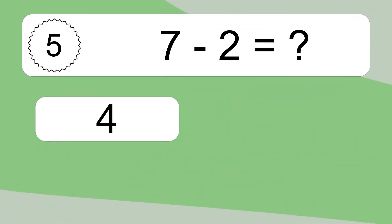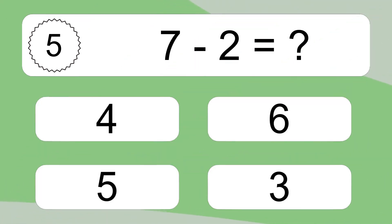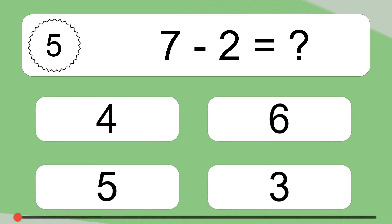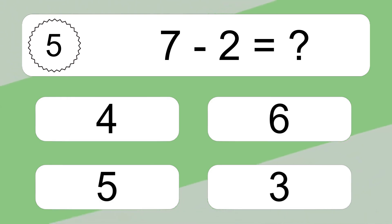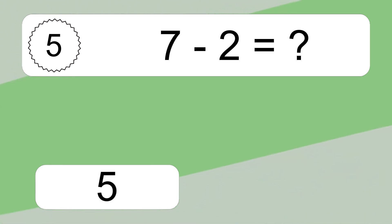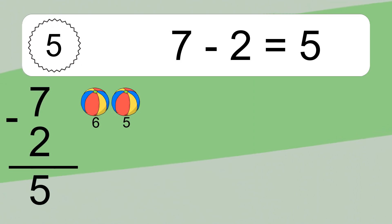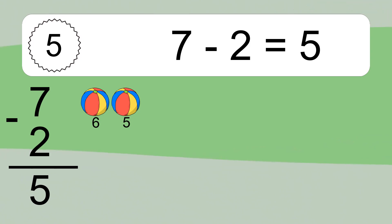4. 7 minus 2 equals what? 7 minus 2 equals 5. Let's count it: 6, 5.